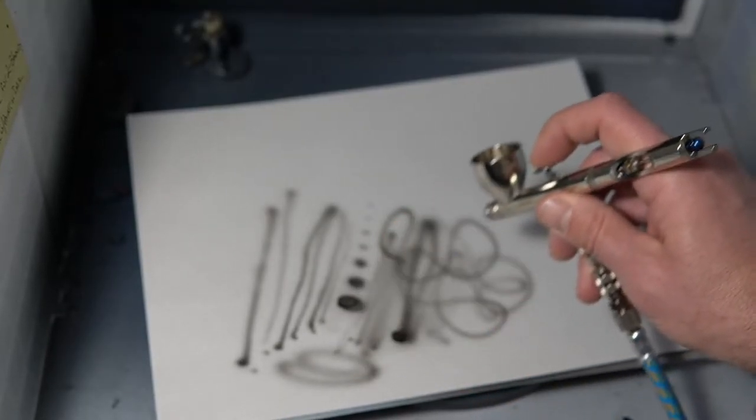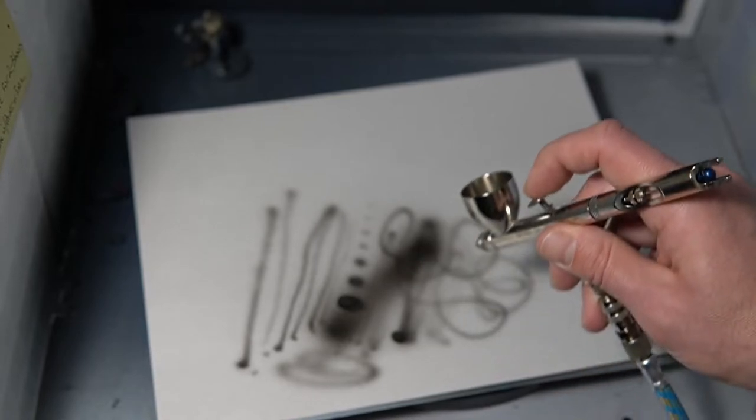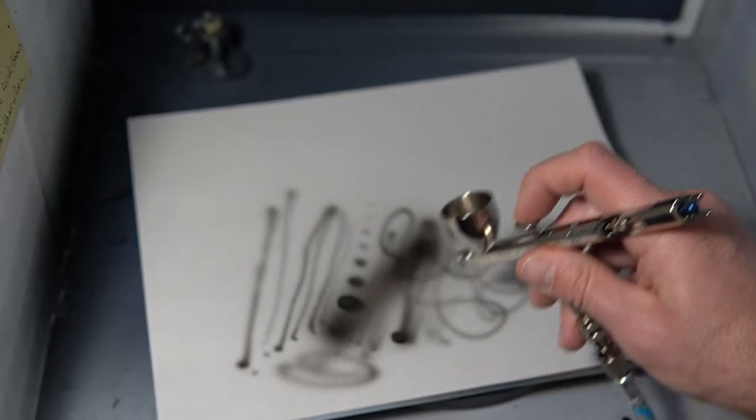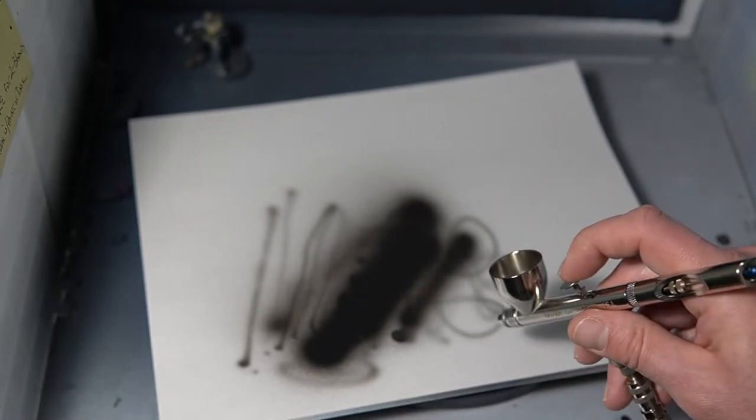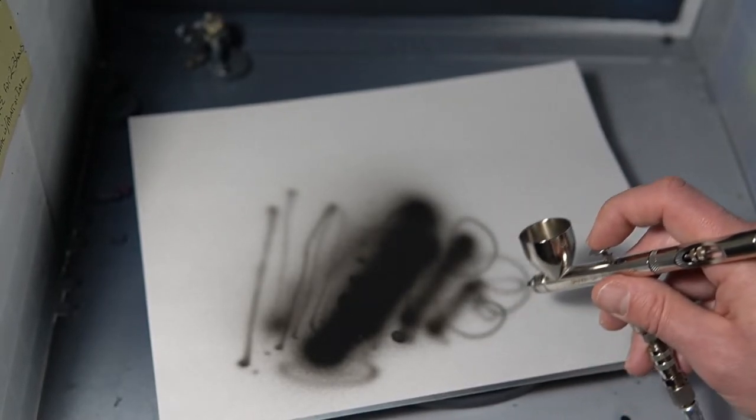It can really be controlled how much paint you want. So if you're pulling back a little, you're only getting a finer spray. If you pull back a lot, it's shooting out. It also depends on the PSI that you have your compressor at, but for the purpose of this, dual action is what you want in an airbrush.